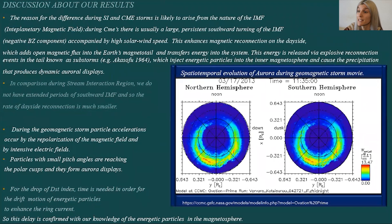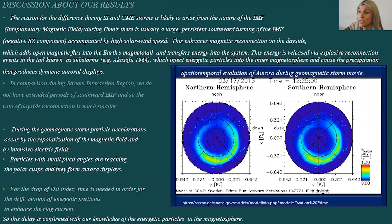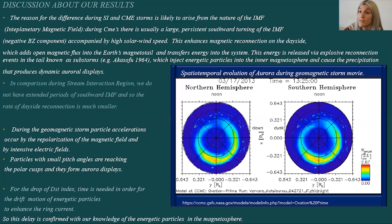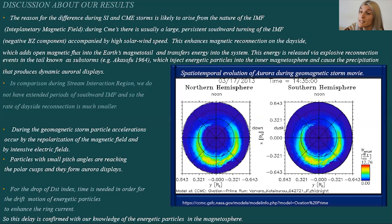Moreover, we have to consider the approximately two hours delay between the maximum energy flux and the minimum value of the DST index. So what does this mean? During the geomagnetic storm, we have injection of energetic particles from the magnetotail to the inner magnetosphere. This injection is enhanced by magnetospheric substorms.